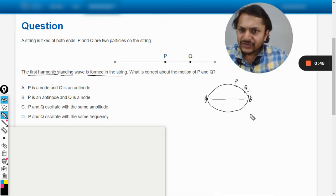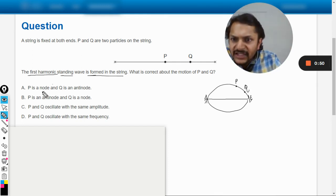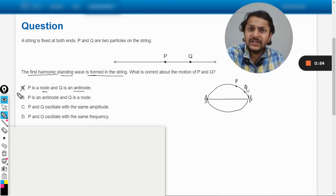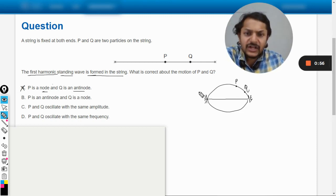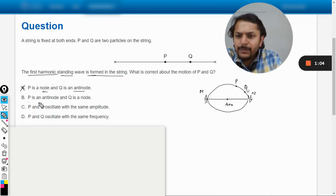Let us try to read the options here. Option A: P is the node and Q is the antinode. Well, that is not at all the case. Why? Because in the first harmonic, in this kind of case, the nodes are happening only at the ends and the antinode is happening only at the center. Option B: P is an antinode and Q is a node - not at all.